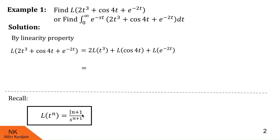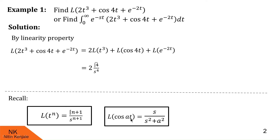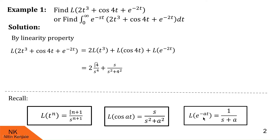Laplace of t³ becomes Γ(4) / s⁴. Similarly, Laplace of cos4t can be obtained using the formula Laplace of cos(at) = s / (s² + a²), so Laplace of cos4t is s / (s² + 16). And Laplace of e^(−2t) uses the formula Laplace of e^(−at) = 1 / (s + a), so with a = 2, Laplace of e^(−2t) = 1 / (s + 2).